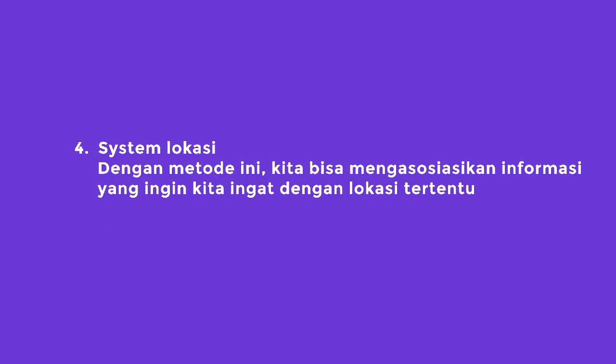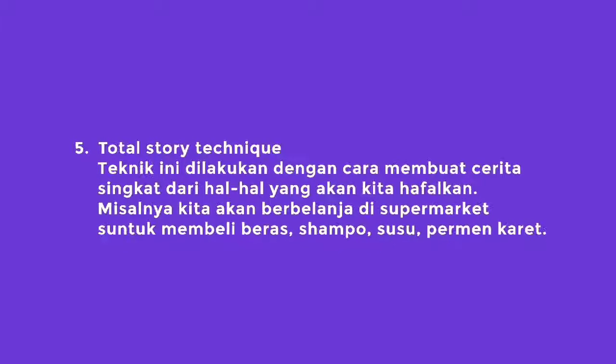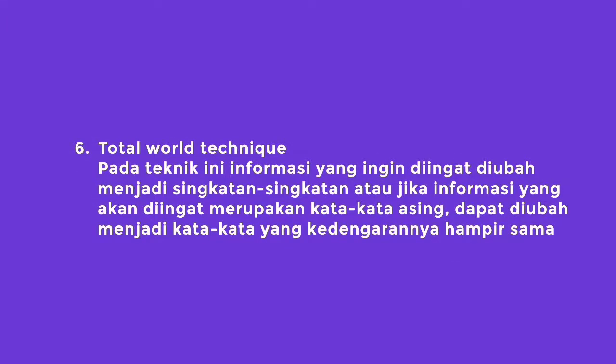Fourth, the location system. With this method, we can associate the information we want to remember with a specific location. Fifth, the total story technique — done by making short stories from the things we want to memorize. For example, we will shop at the supermarket to buy rice, shampoo, milk, chewing gum, and others. Sixth, the total word technique — the information you want to remember is converted into abbreviations, or if the information to be remembered is a foreign word, it can be changed into a word that sounds almost the same.